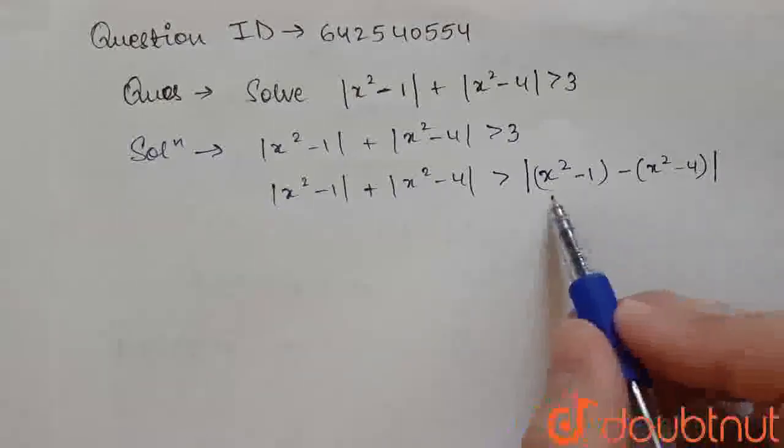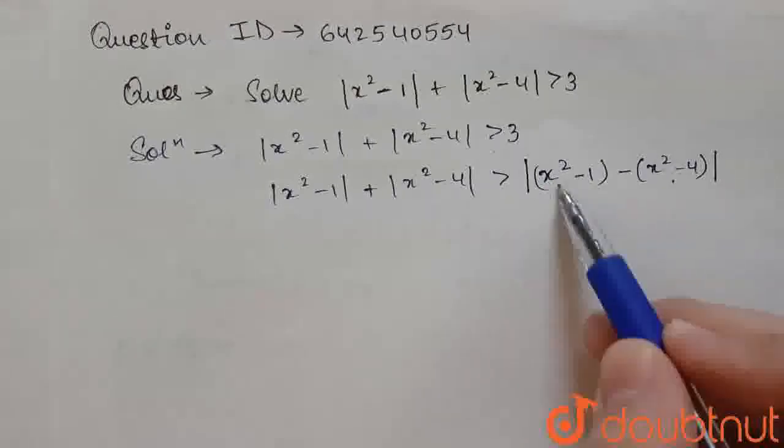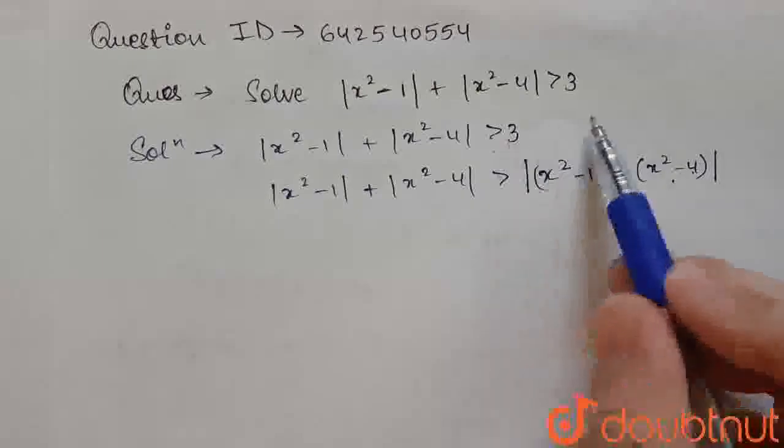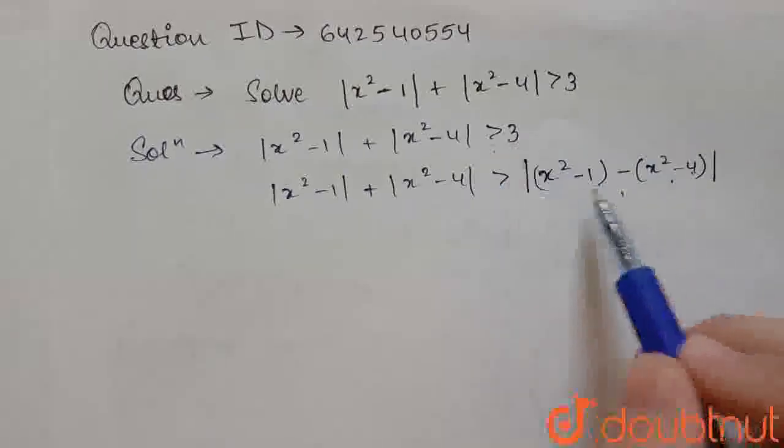So on solving this, this will give 3, as x will get cancelled out and minus 1 plus 4 gives 3. So this is the same, we can write it as this.